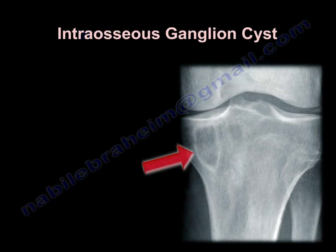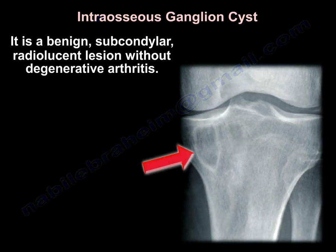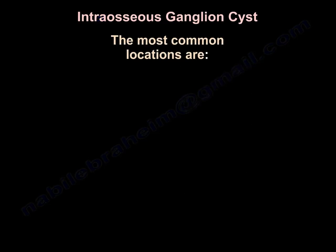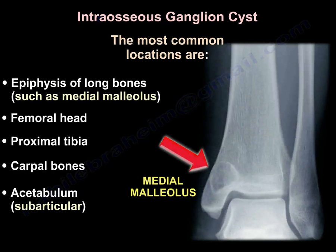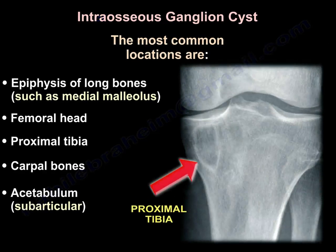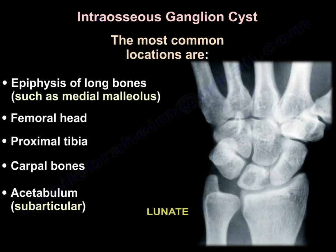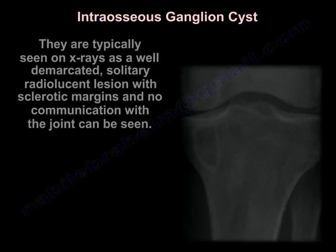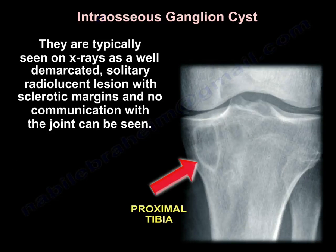Interosseous ganglia is a benign subchondral radiolucent lesion without degenerative arthritis. The most common locations are the epiphysis of long bones such as the medial malleolus, femoral head, proximal tibia, and carpal bones. It can also occur subarticular in the acetabulum. On X-rays, they are typically seen as a well-demarcated solitary radiolucent lesion with a sclerotic margin and no communication with the joint.